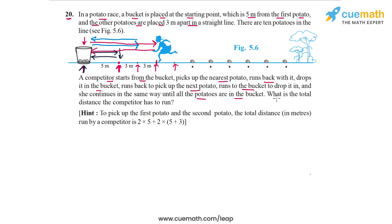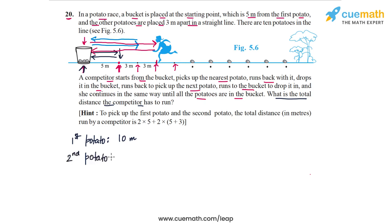What we have to do is calculate the total distance the competitor has to run. For each potato, we calculate the distance the competitor has to travel to pick it up and put it back into the bucket. For the first potato, she runs 5 meters one way and 5 meters back — that's 10 meters. For the second potato, she runs 8 plus 8 or 16 meters. For the third potato, 11 plus 11 or 22 meters, and so on.